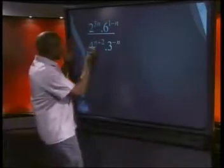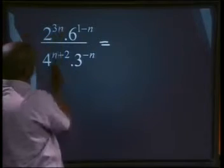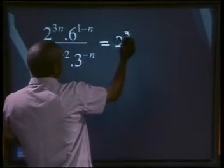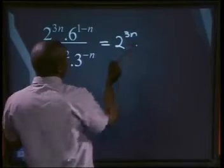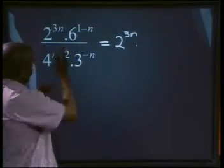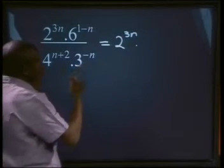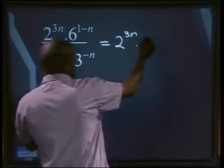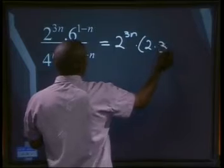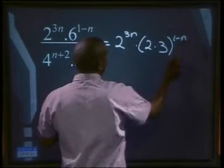In this case, 2 is a prime number, so 2 can be written as 2 to the power of 3n, multiplied by our 6. 6 is not a prime number — what are the prime factors of 6? It will be 2 times 3. That means 6 can be written as 2 times 3, all to the power of 1 minus n.